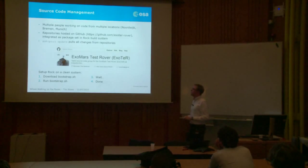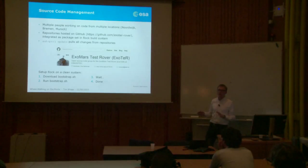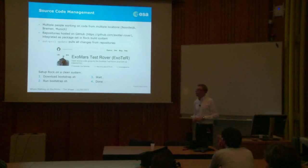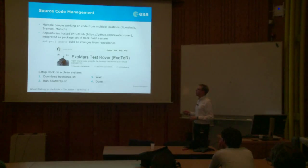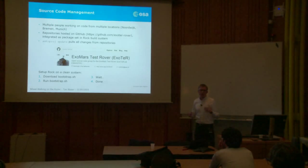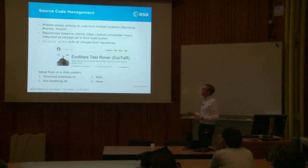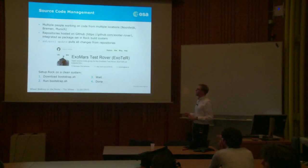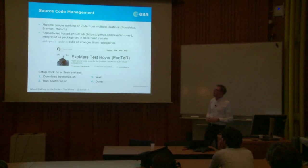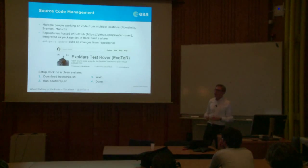For source code management, we worked with several people across different locations — the rover was at ESTEC in Nordwijk, but coding was also done at DFKI in Bremen and from Munich. We hosted our repositories on GitHub, where they are publicly available. These were integrated into the Rock build system, so whenever we ran autoproj update, all repositories were updated and code fetched from GitHub if there were changes.